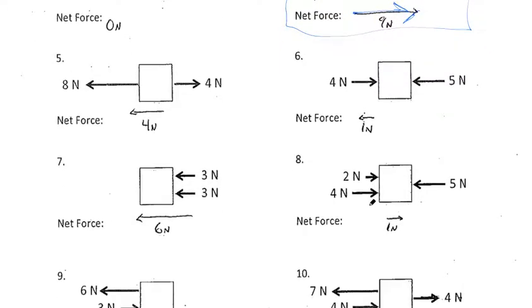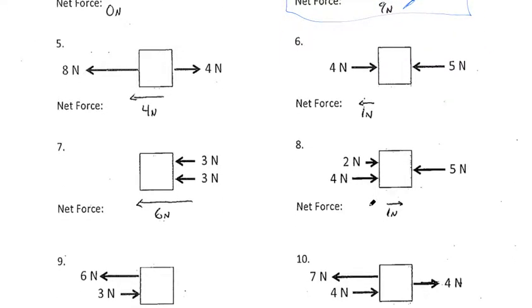Let's take a look at number eight next. Similar to some of the questions on the previous page, I have a total of six newtons acting towards the right, five newtons acting towards the left. When those cancel each other out by five newtons,